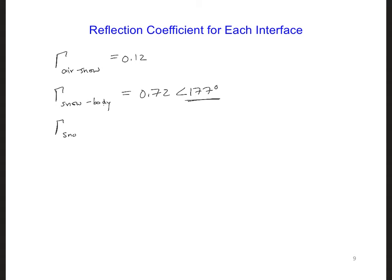And then for the snow-ground interface, I got 0.35 at 179 degrees.